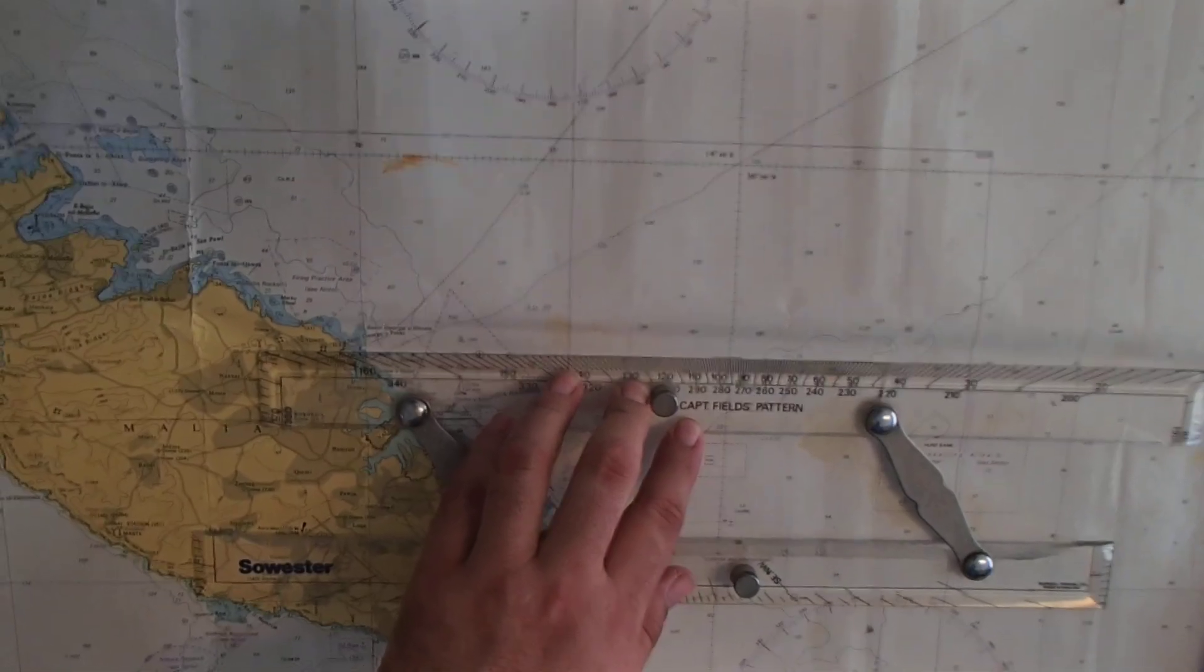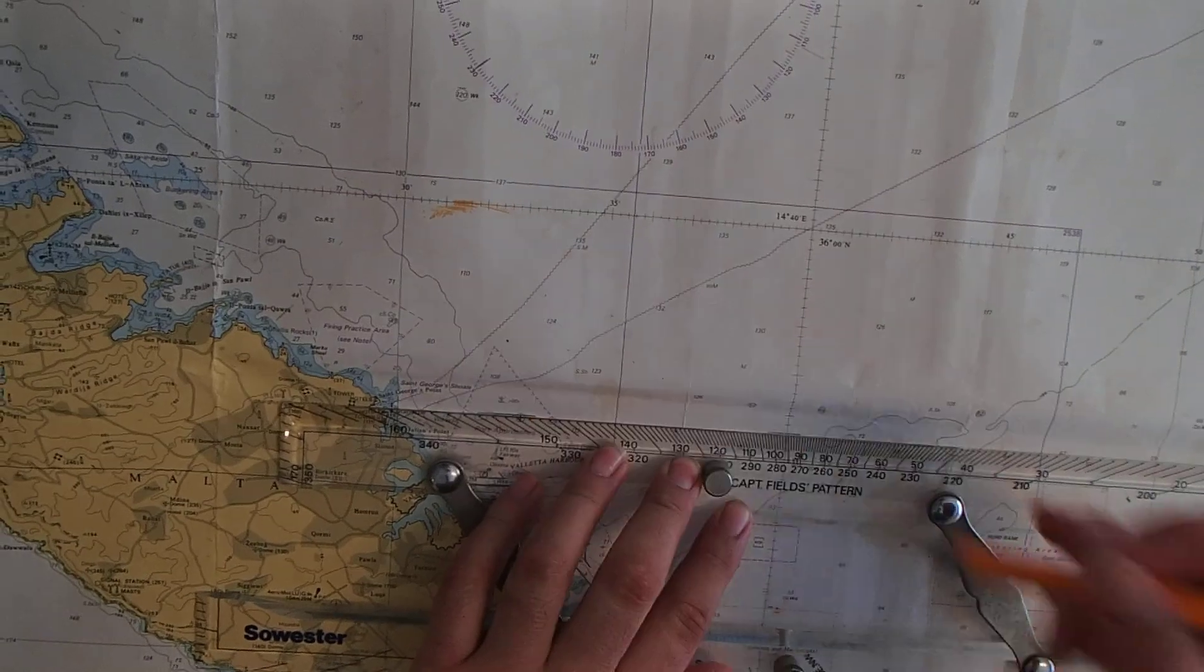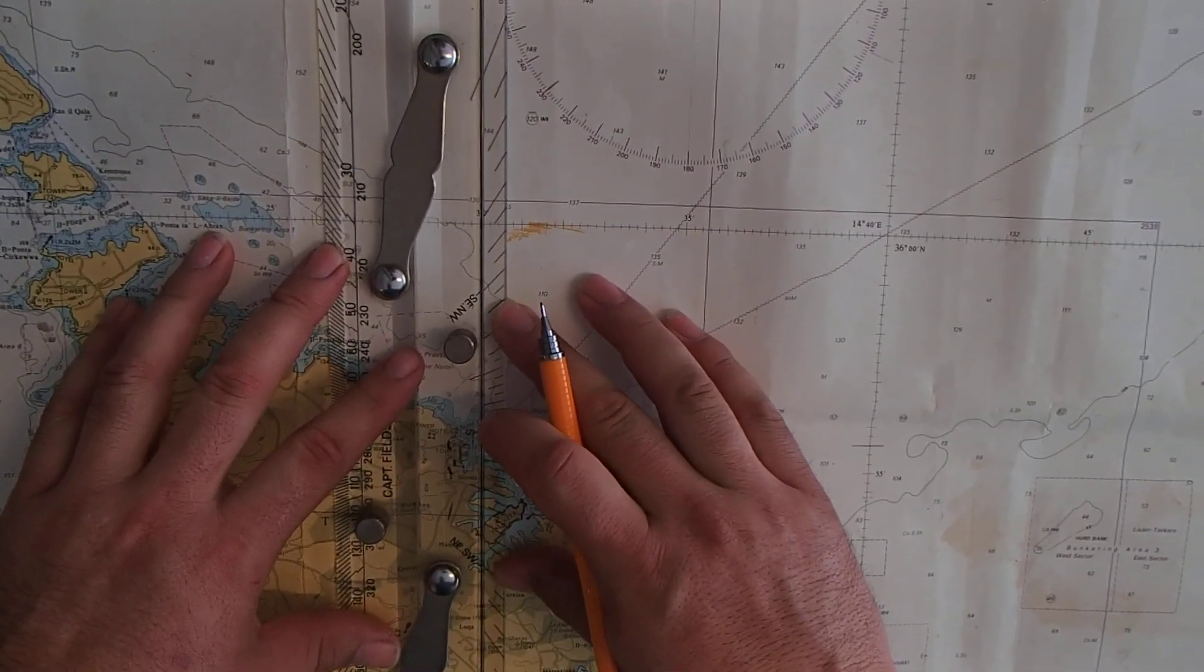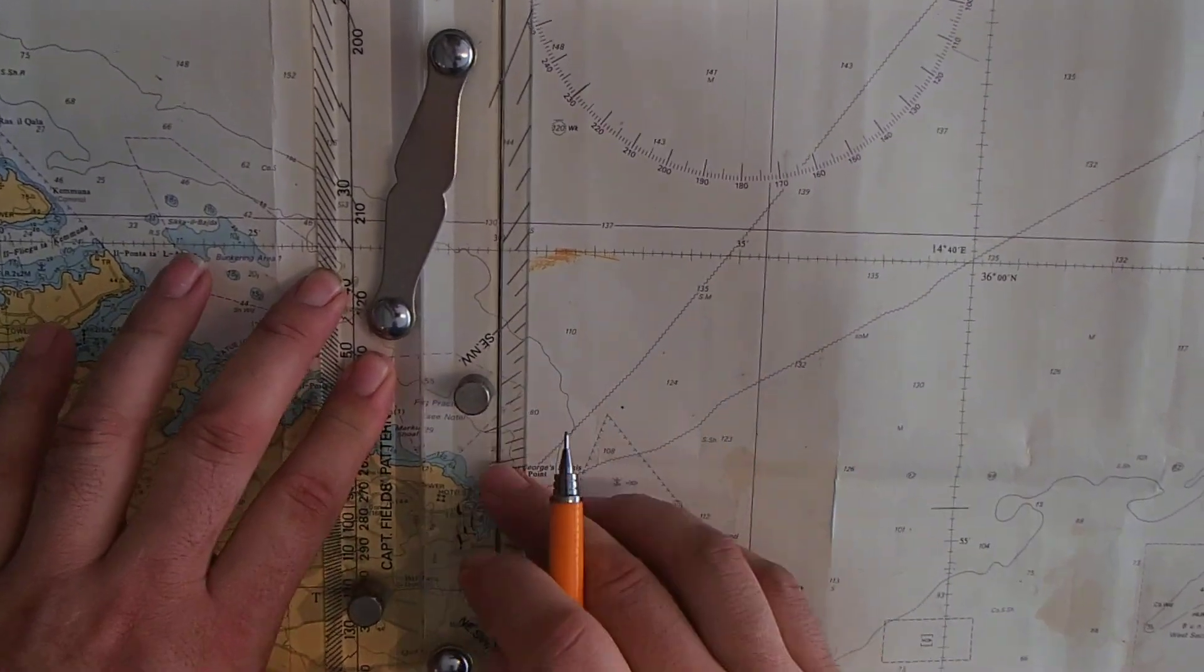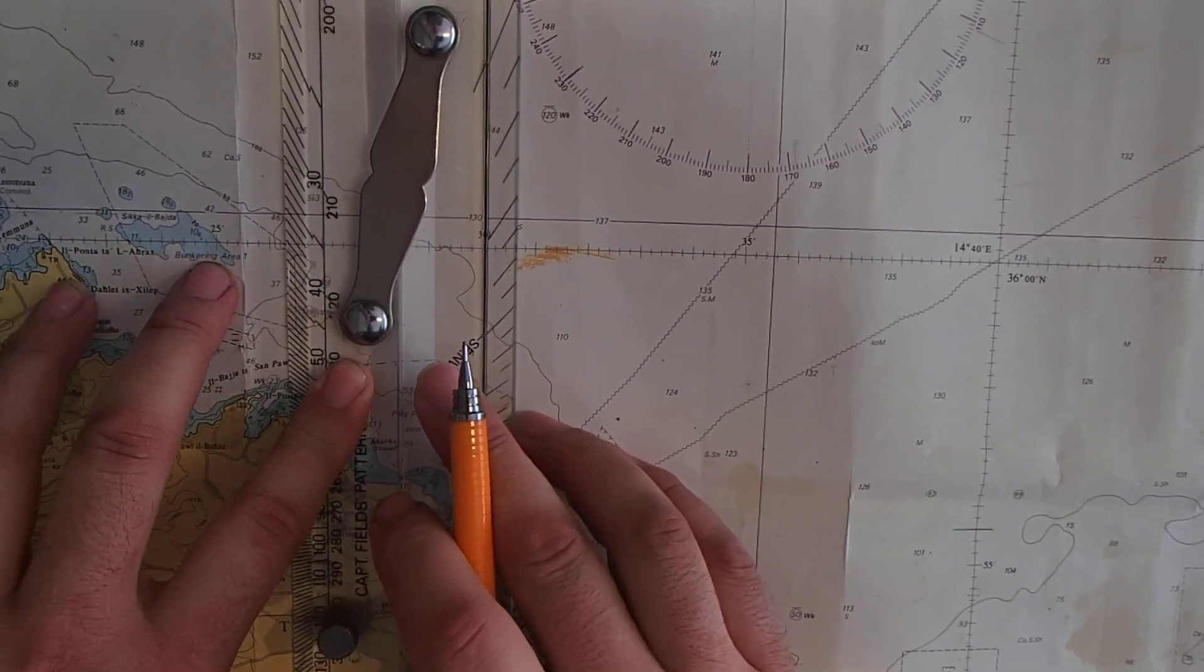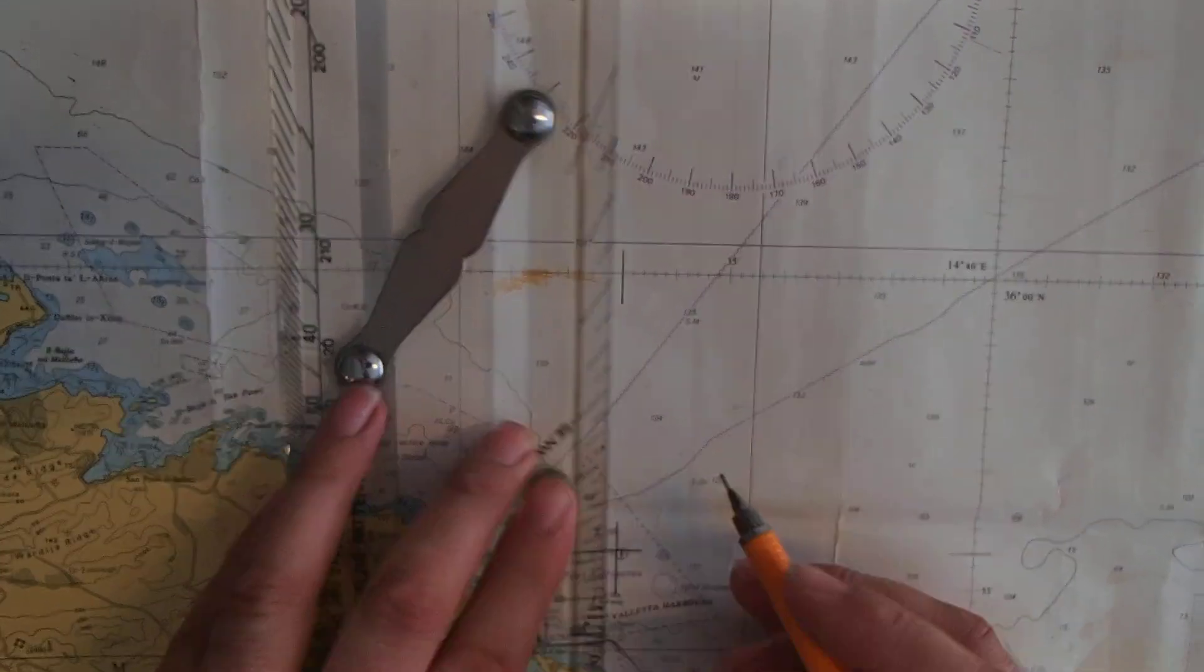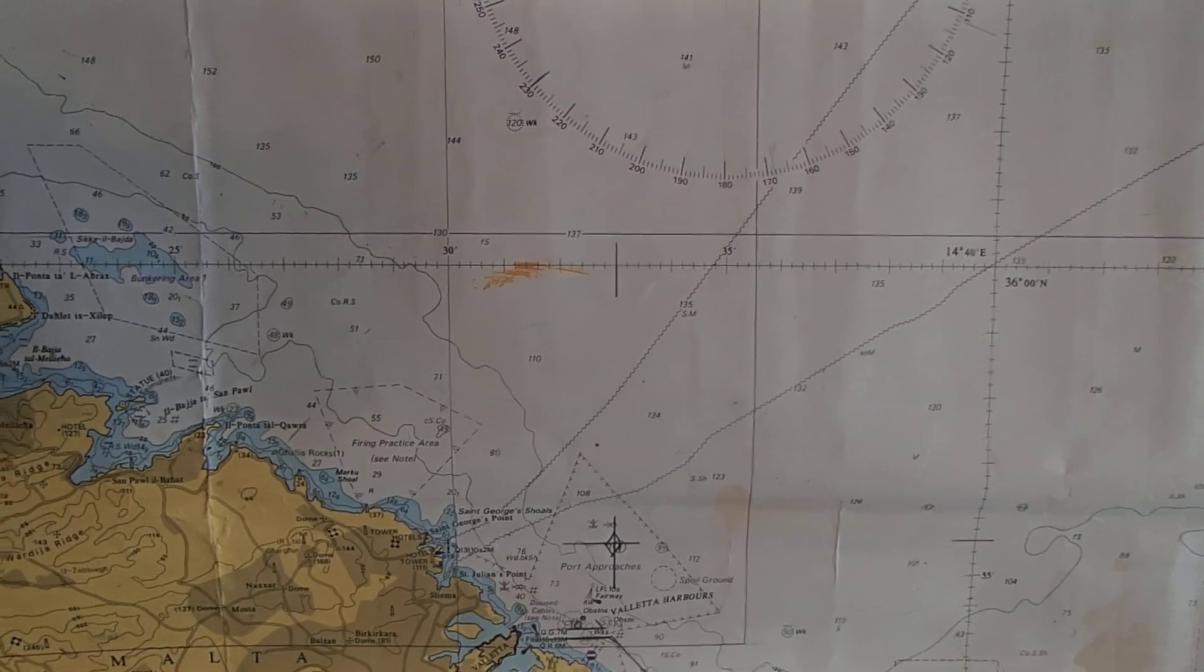Now we need our line of longitude 14 33. Turning around the parallel ruler, putting the line on top of one of the longitudinal lines onto the chart. We have it on 30 moving to 14, as we can see here 33, so 31 32 33 and that will be our first position for our course.